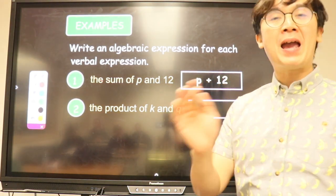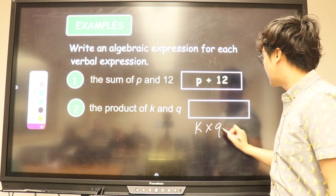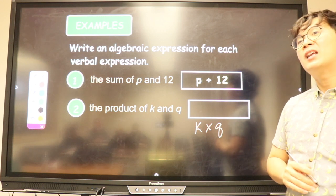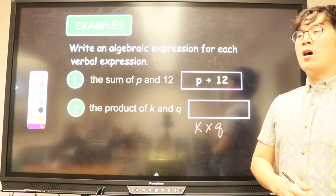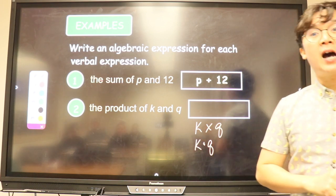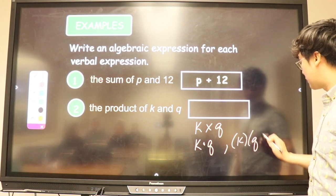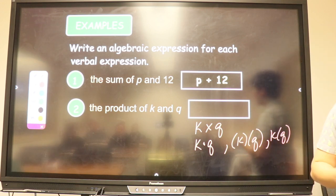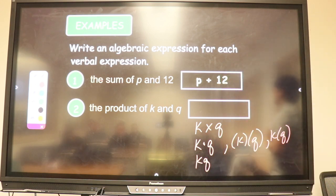We have several options, so in mathematics knowing your symbols is important. Sometimes we can write it as k times q like this, however this is a little bit problematic. Why? Because x is also a letter. To avoid that mistake we use different symbols. We use a dot for multiplication. It's not limited to a dot - sometimes we use parentheses like this, sometimes we just write it like this, or sometimes like that. All of them mean the same thing.